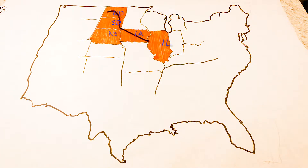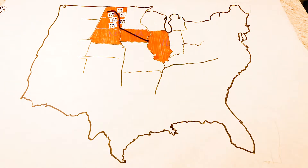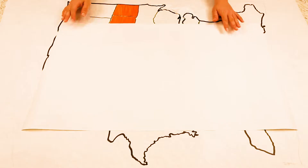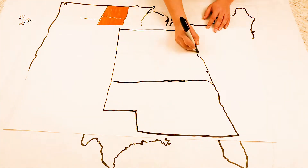Now that we know where the pipeline is, the dots drawn represent the location of protesters to DAPL. On this sheet, we show all of the reservations in the surrounding area.